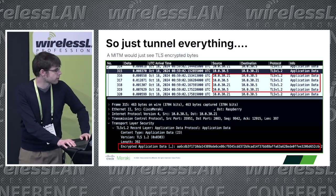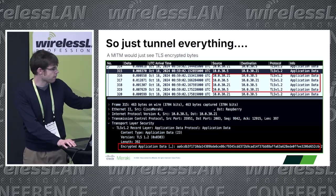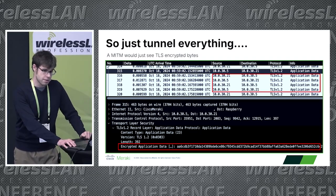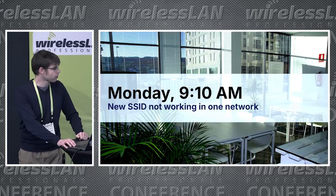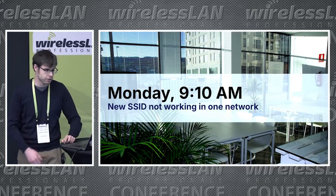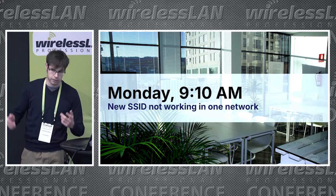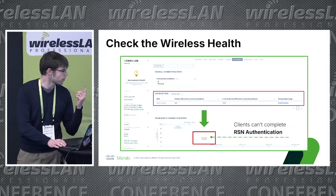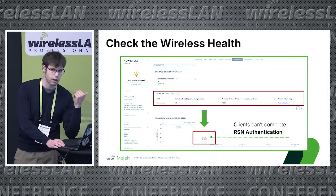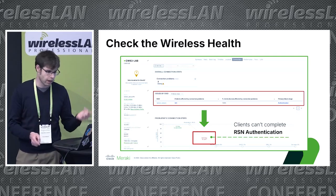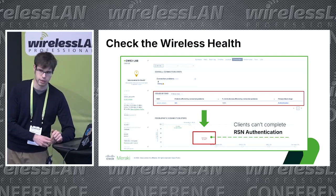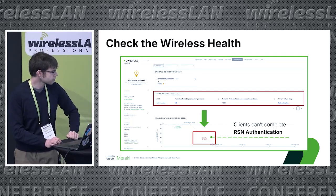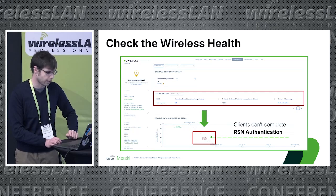We deployed this over the weekend — 500 new sites — and we go home, all good, and log in the following morning. We get a bunch of tickets saying the SSID doesn't work on a single site and no one can connect. We check on the dashboard; there's a wireless health page for the entire network and for a single access point. We notice that no client can connect, and it always fails during the RSN authentication phase.